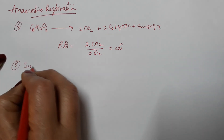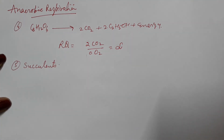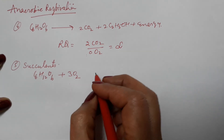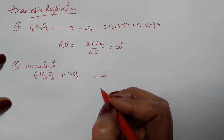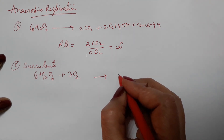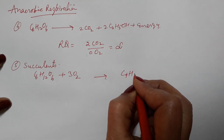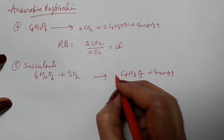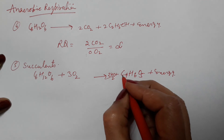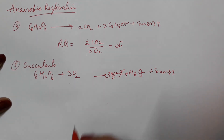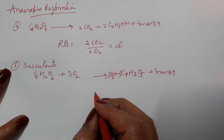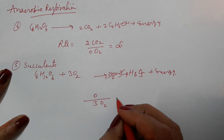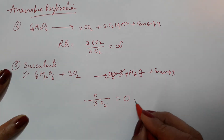In case of succulents, the respiratory substrate is glucose. Three molecules of oxygen are utilized, but no CO2 is released. Malic acid is produced here, along with energy, three water molecules, and three molecules of malic acid. Since no CO2 is released and three molecules of oxygen are used up, the RQ becomes equal to zero. So, in case of succulents, RQ value is equal to zero.